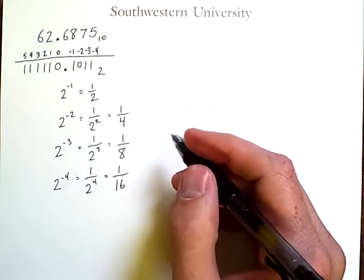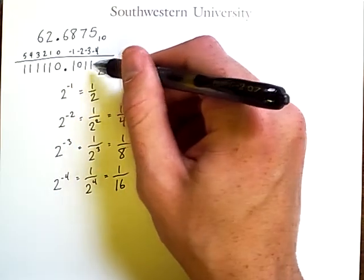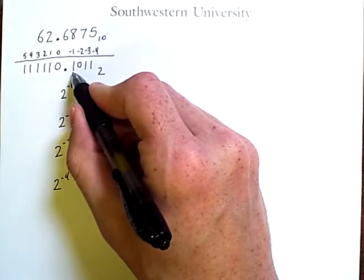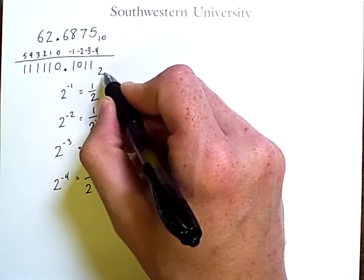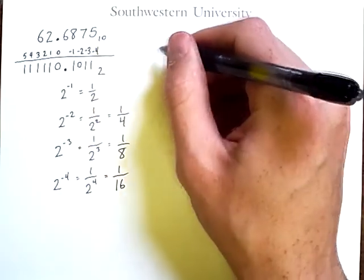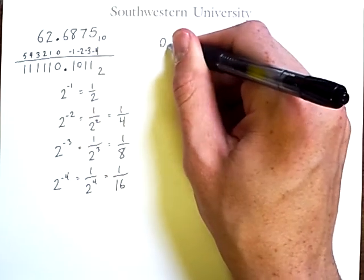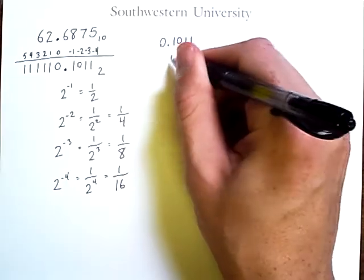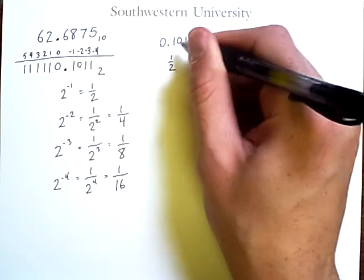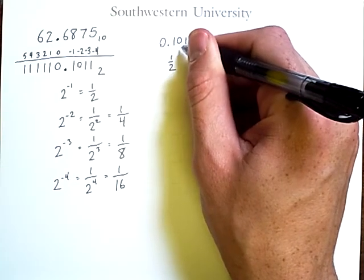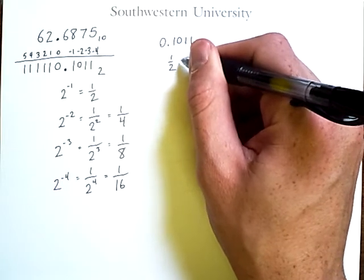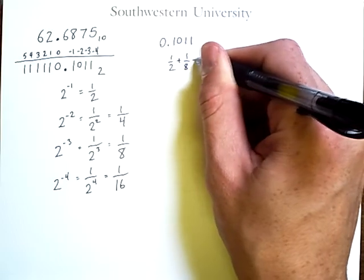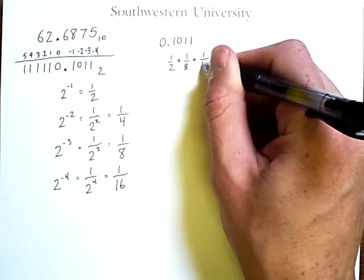So now that we know that these values correspond to negative exponents, we can compute this value and confirm that it will come out the same as follows. So 0.1011. This 1 is 1 half. This 0 would be a position for 1 fourth, but 0 times anything is 0. And from this 1, we have 1 eighth. And then from that 1, we have 1 sixteenth.